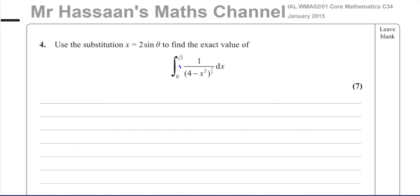So that's what I'm going to save it under. We're asked to use integration by substitution to find the exact value of the integral of 1 over (4 minus x squared) to the power of 3/2 with respect to x, between the limits of 0 and √3.